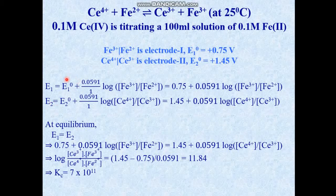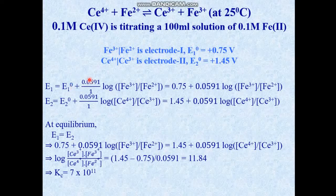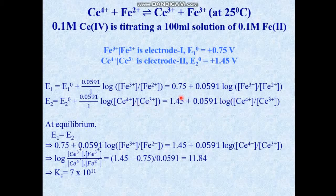The Nernst equation used here is form six, which is most convenient because it allows calculation at standard state — 25°C and one atmospheric pressure. For system one: E₁ = E₁° + (0.0591/1) × log([Fe³⁺]/[Fe²⁺]), putting E₁° = 0.75 V. For system two: E₂ = E₂° + (0.0591/1) × log([Ce⁴⁺]/[Ce³⁺]), with E₂° = 1.45 V.